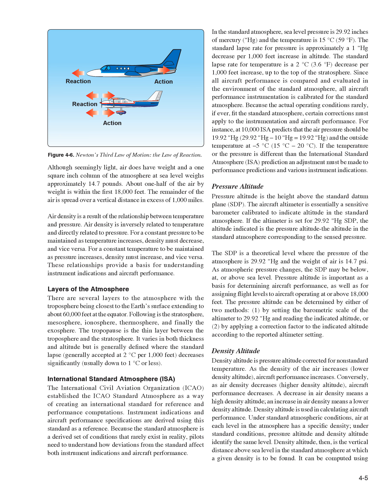Pressure Altitude. Pressure altitude is the height above the standard datum plane (SDP). The aircraft altimeter is essentially a sensitive barometer calibrated to indicate altitude in the standard atmosphere. If the altimeter is set for 29.92 Hg, the altitude indicated is the pressure altitude. The SDP is a theoretical level where the pressure of the atmosphere is 29.92 Hg and the weight of air is 14.7 pounds per square inch. Pressure altitude is important as a basis for determining aircraft performance, as well as for assigning flight levels to aircraft operating at or above 18,000 feet. It can be determined by setting the barometric scale to 29.92 Hg, or by applying a correction factor to the indicated altitude according to the reported altimeter setting.